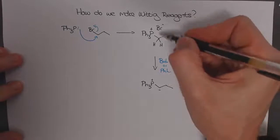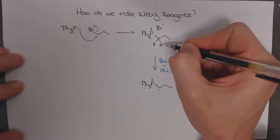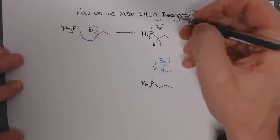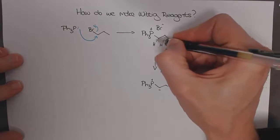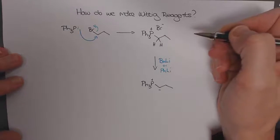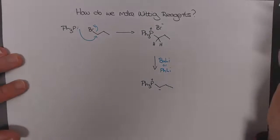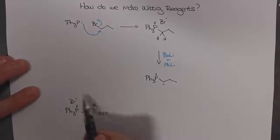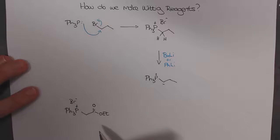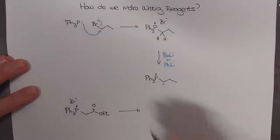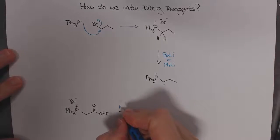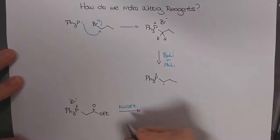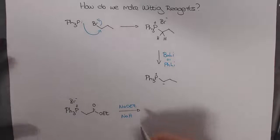As you would have noticed here, we need to use a very strong base to deprotonate this proton next door to the phosphorus. But if we put something else on the carbon next door to these protons that would acidify them, we would actually use a much weaker base. This would have been made in the same way as the Wittig salt we showed at the top. But now we can use a milder base. Just sodium ethoxide might be appropriate, or sodium hydride will also be strong enough to deprotonate and give us the Wittig ylid.